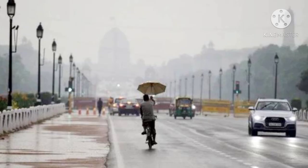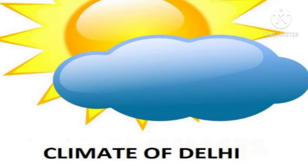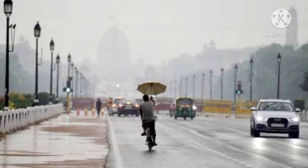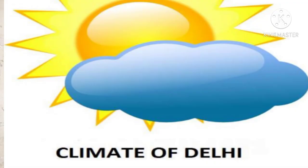Summers are long and extremely hot. The rainy or monsoon season is short. Winters are very cold and start late in November. So Delhi experiences all seasons: summer, winter, autumn, rainy, etc. Hope students you have understood about the climate.